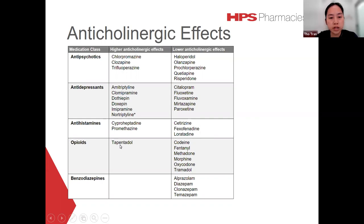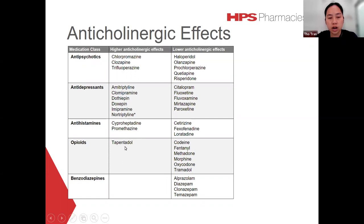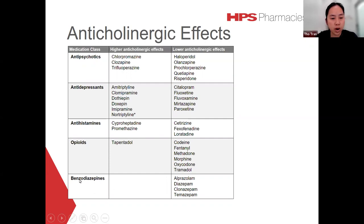For opioids, tapentadol has higher anticholinergic effects compared to oxycodone. Tapentadol has been used quite a lot in hospital compared to endone, because it has a lower risk of constipation. However, the risk of getting anticholinergic effects is higher compared to endone, which is unfortunately a trade-off to consider.